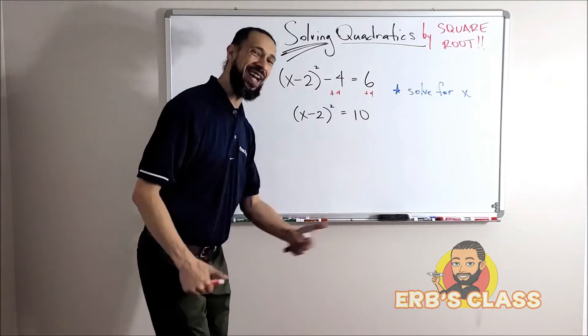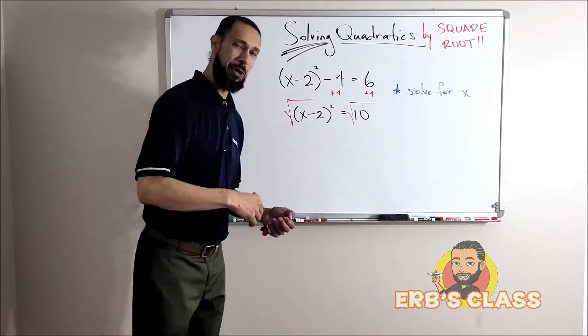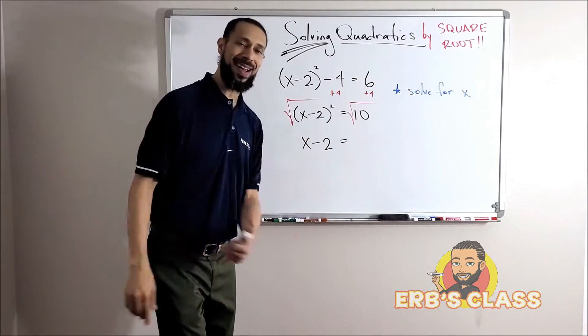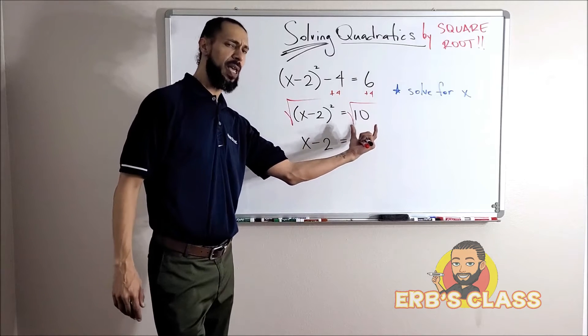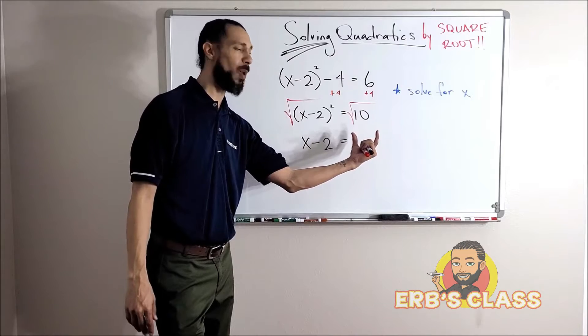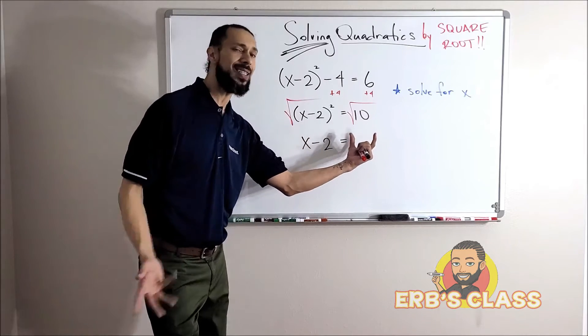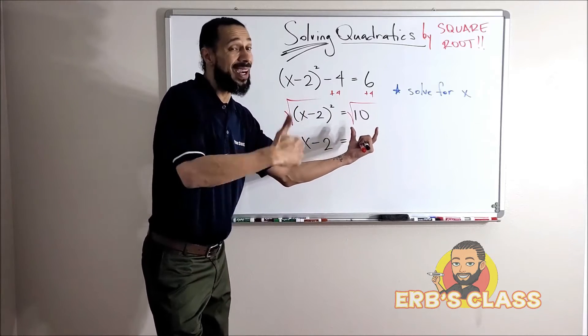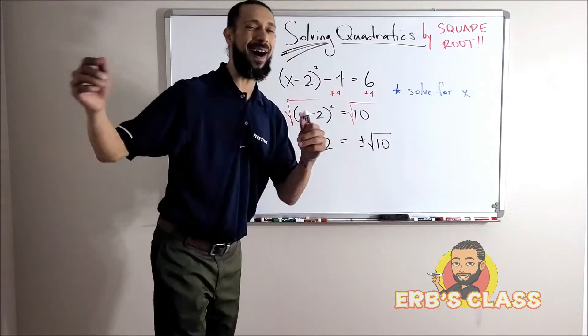Now it's alone. Can I square root now? Good. And where does that leave us? x minus 2. Whoa, what's the square root of 10? That didn't come out all pretty like the rest of our problems did. The square root of 10 doesn't come out to be a whole number, so I'm going to leave it just like that. But don't forget the plus or minus.